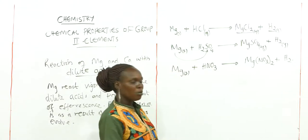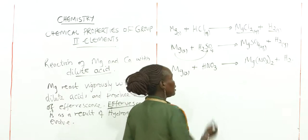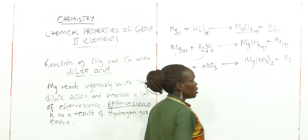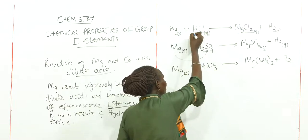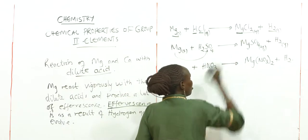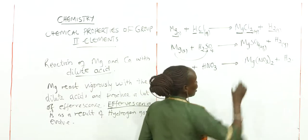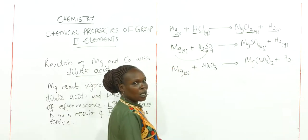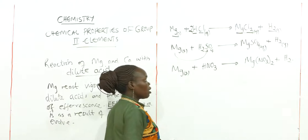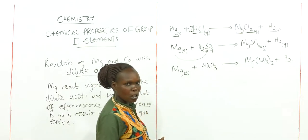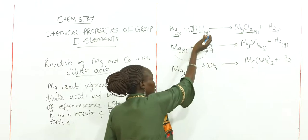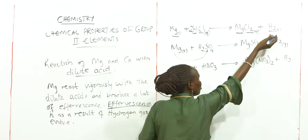Let us check whether these chemical equations are balanced. In the first reaction of magnesium with hydrochloric acid to give magnesium chloride plus hydrogen gas: on the reactant side there is one atom of chlorine, one atom of hydrogen, and one atom of magnesium. On the product side we have one atom of magnesium, two atoms of chlorine, and two atoms of hydrogen — so the equation is unbalanced. We add two in front of hydrochloric acid to balance it. Now we have two hydrogen atoms and two chlorine atoms on both sides.